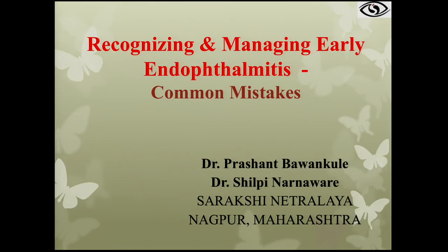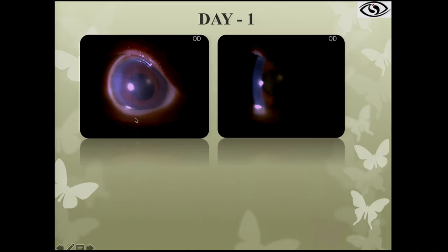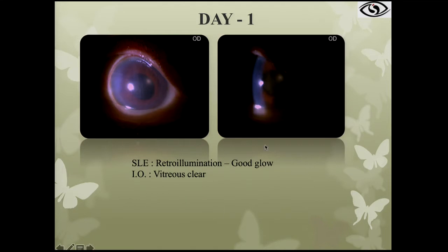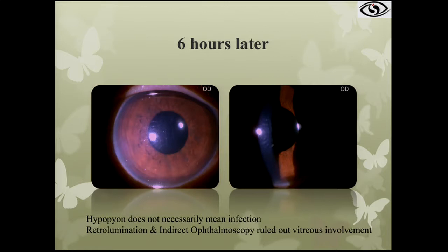Case 1: a non-diabetic 73-year-old male underwent uneventful phaco surgery for a mature cataract. He had severe inflammation and was treated elsewhere with subconjunctival antibiotics and oral steroids. When he presented to us, he had corneal SK and a 2mm hypopion. Retroillumination showed a good glow and indirect ophthalmoscopy showed clear vitreous. The diagnosis was not infective — it was traumatic. We treated with topical steroids and cycloplegics, stopped the oral steroids, and the hypopion resolved 6 hours later. Hypopion does not necessarily mean infection every time.